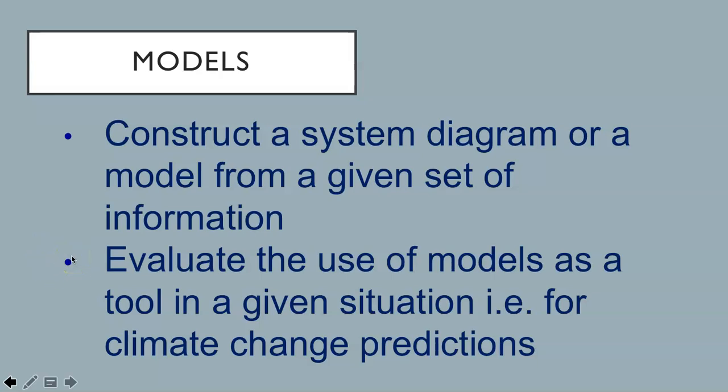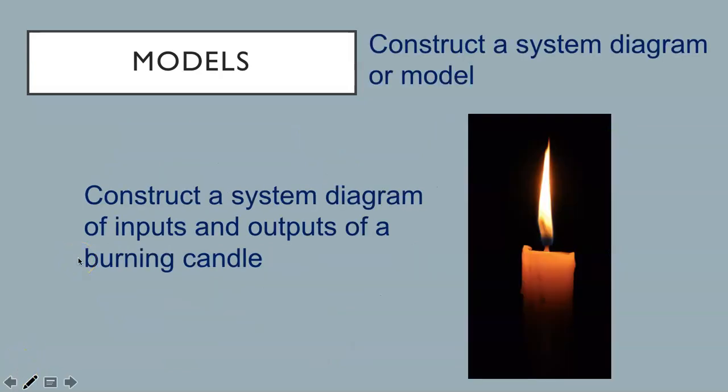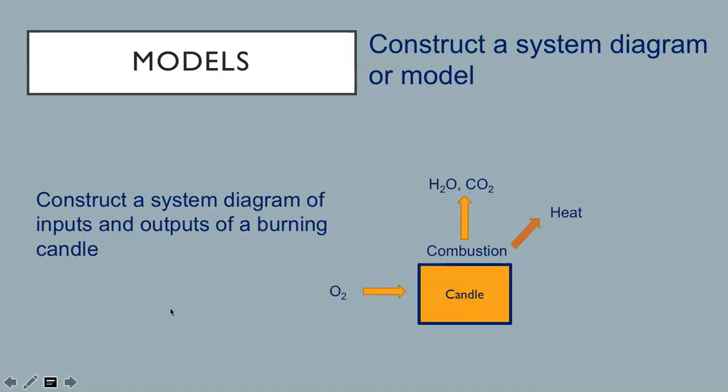Let's try a small example. Can you construct a diagram of inputs and outputs of a burning candle? Stop the movie and construct a system diagram with a box and arrows to represent this image. How did you do? Did you get the inputs and outputs and the main process of combustion?